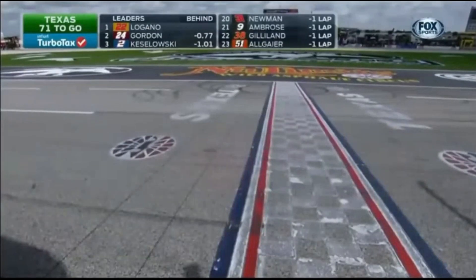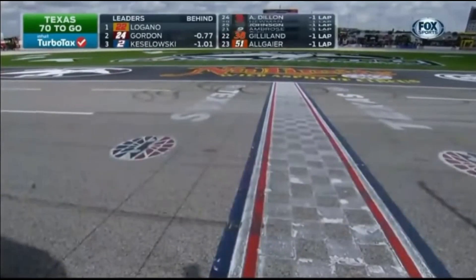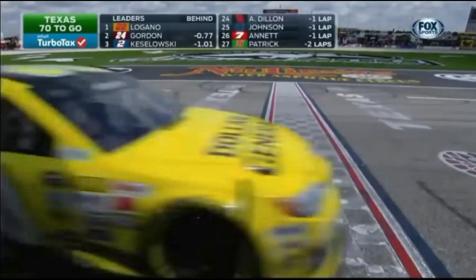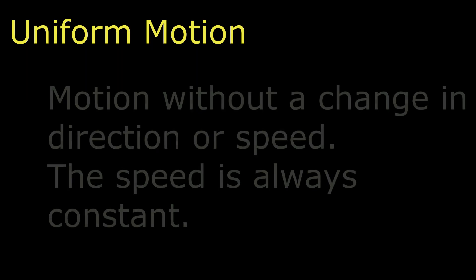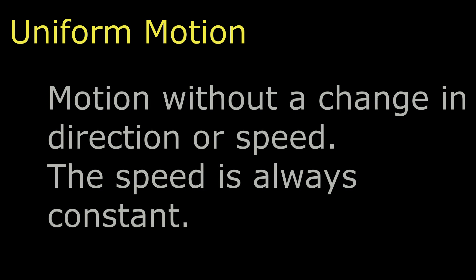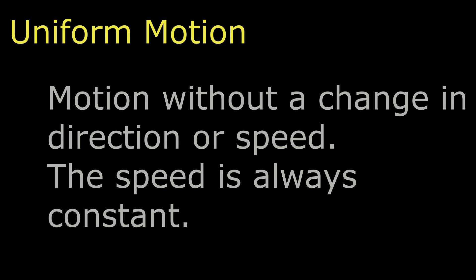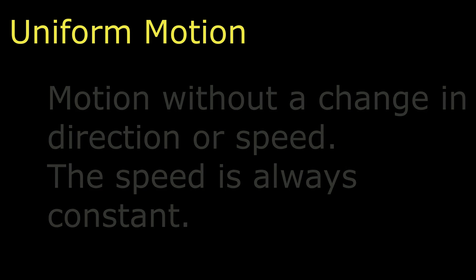If a race car is traveling on a one-lane track at a constant speed of 200 miles per hour, is it accelerating or demonstrating uniform motion? The race car would have uniform motion because the speed is constant and there is no change in direction.